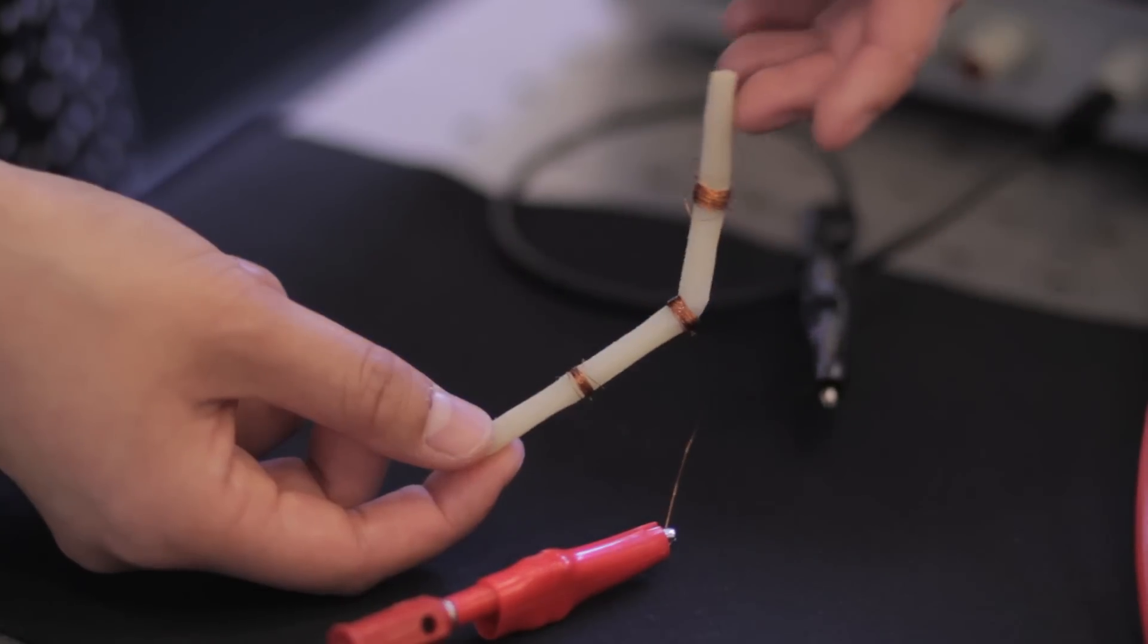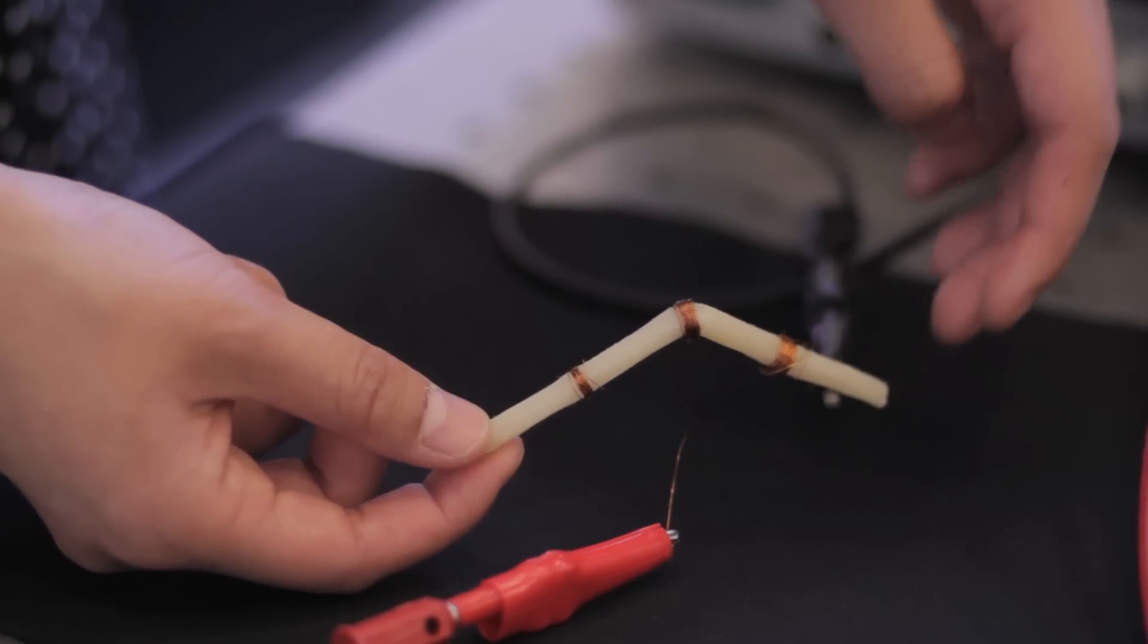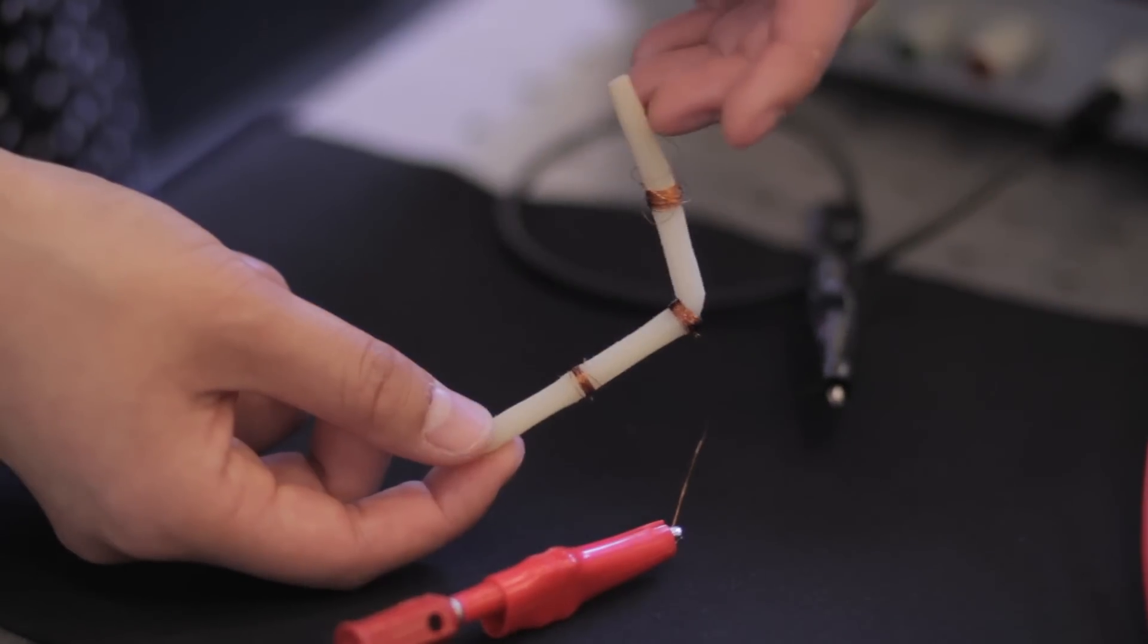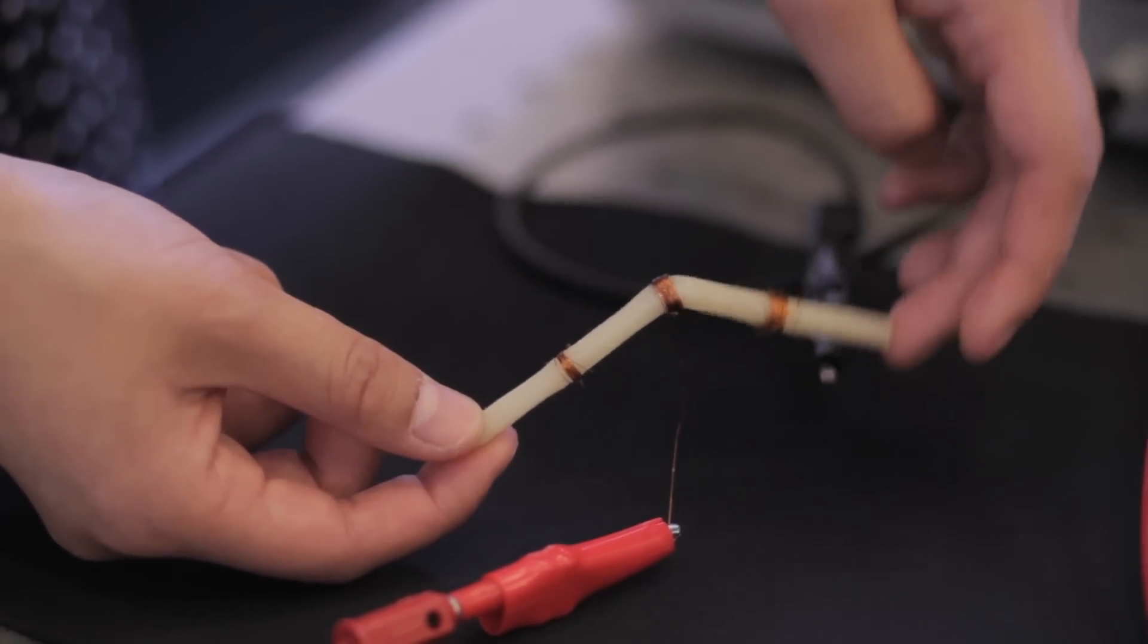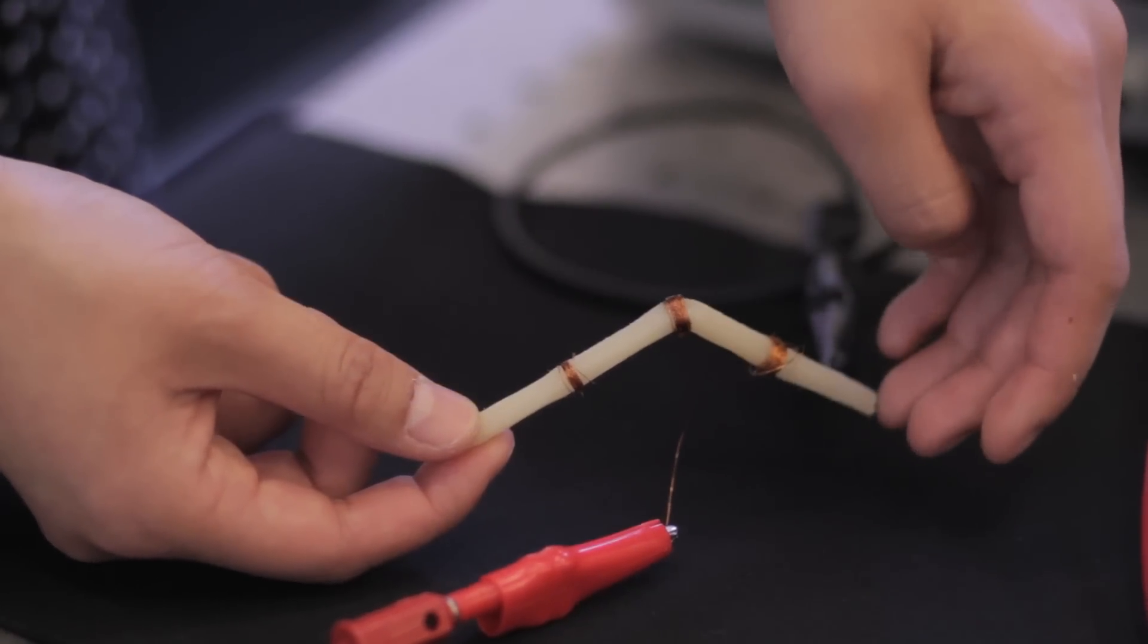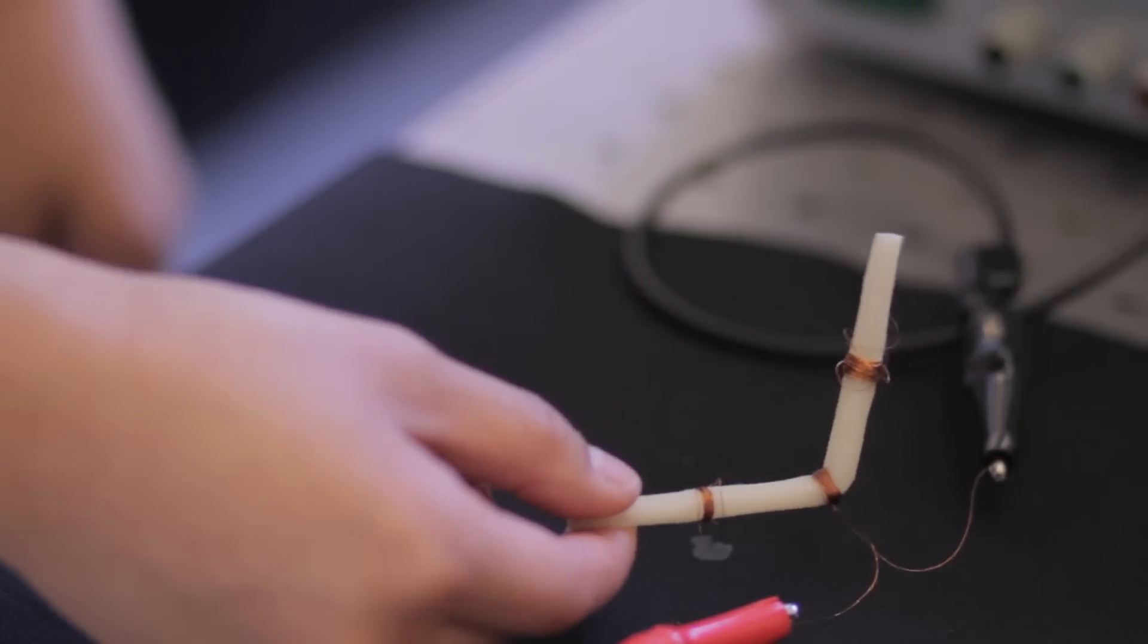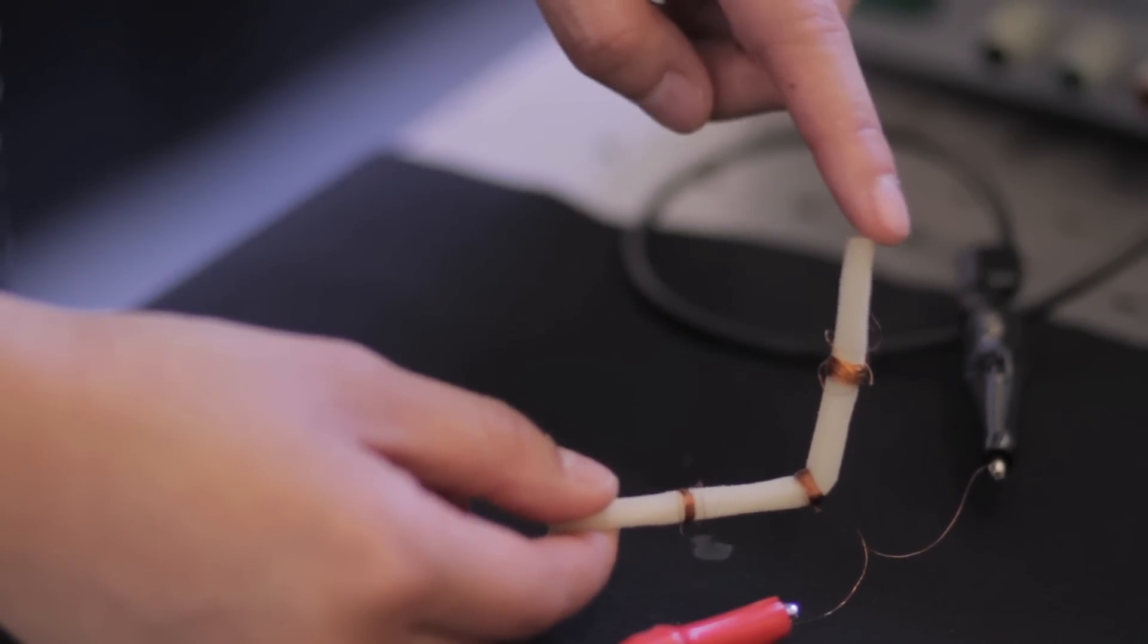And so what we're trying to do is to go away from that a little bit. We wanted to develop tunable stiffness structures and materials. And the idea is that the robot should be soft in situations where we want to conform to the environment or squeeze through tight spaces, but we also would need it to be rigid when we need to apply loads on the environment so that we can adequately push against objects.